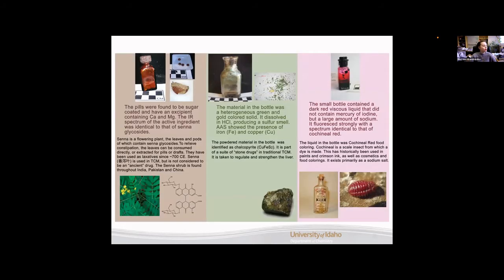Our first one is this pill bottle. You can see the pills here and here's one cracked open. The pills were sugar coated. This brown part you can see externally and the excipient contained calcium and magnesium. The IR spectrum of the internal components of this pill were identical to that of senna glycosides. Senna glycosides come from senna, which is a flowering plant. Both the leaves and the pods, you can see a picture down here, contain the senna glycosides. This is used to relieve constipation. These leaves can be consumed multiple different ways, pills, teas, making drafts of it, or just eaten directly. They've been used as laxative since about 700 CE, and here are the Chinese characters for senna. It has been used in TCM for a long time but it's not actually considered to be an ancient drug. This shrub can be found throughout India, Pakistan, and China.